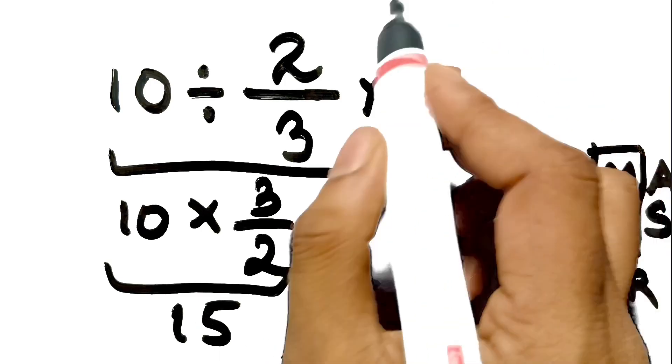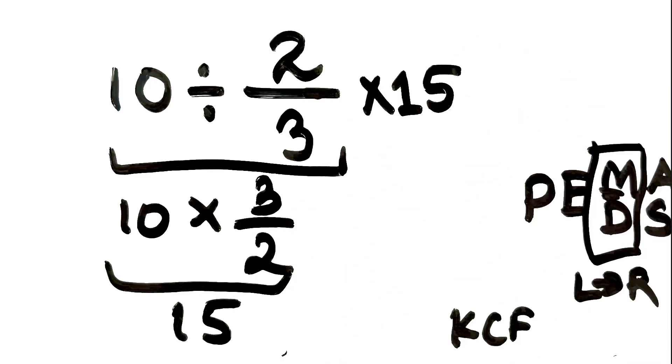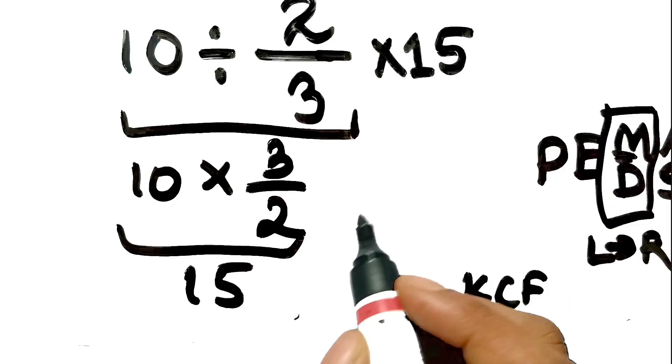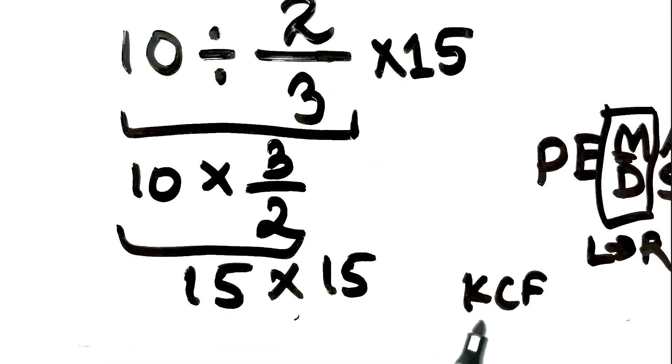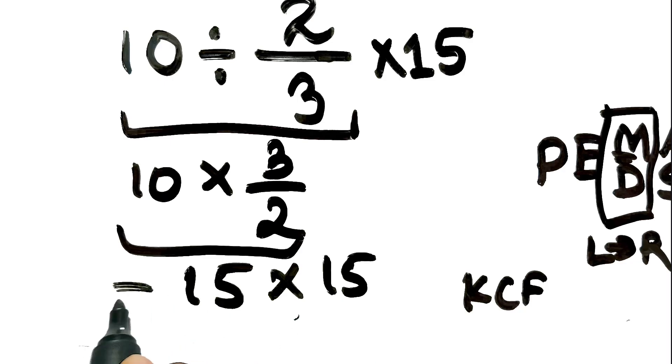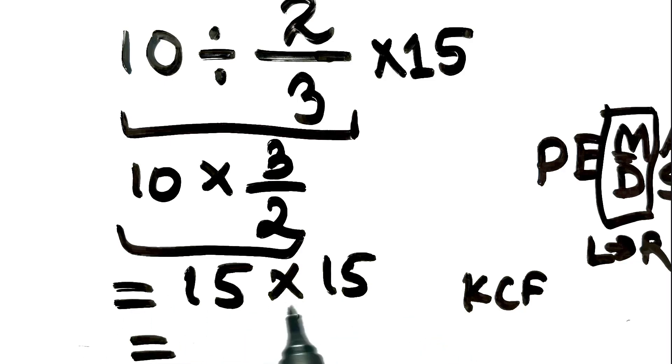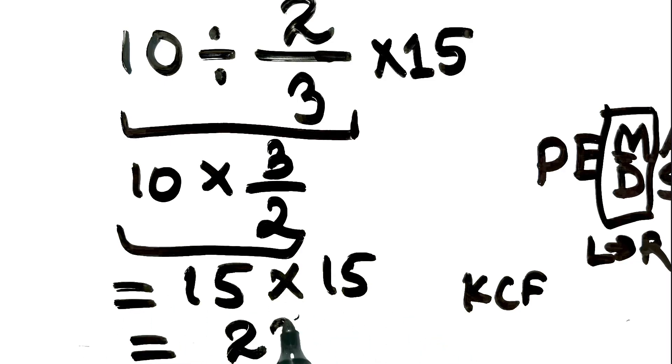Now, we bring down the final part. We are left with 15 multiplied by 15. If we had cancelled earlier, it would be wrong. We simply calculate the final product. And this is our final answer to this problem. The correct answer is 225.